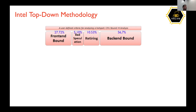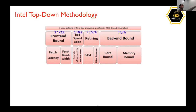When you profile an application, you get numbers like these — some measurements we collected. You have these four categories. For example, you get 56.7% for back-end bound. Then you ask yourself: how can I improve my program? This doesn't tell me too much; I want to figure out the concrete problem. So you go one level deeper — these are the level-two categories.